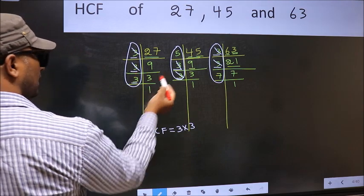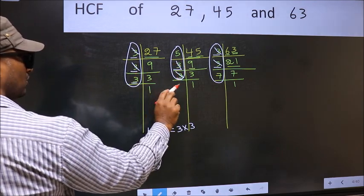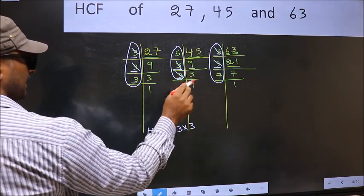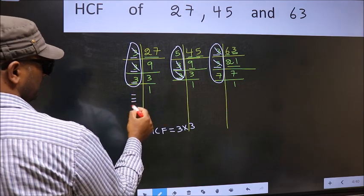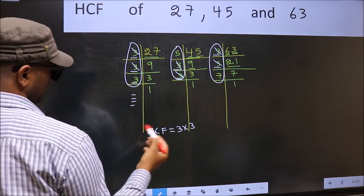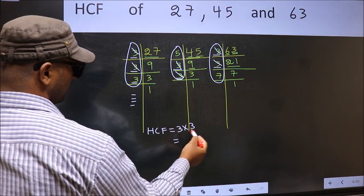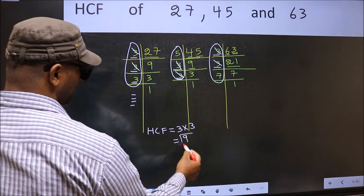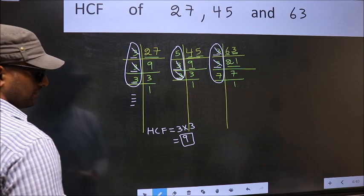Next number 3. Do we have 3 here? No. No need to check in the other place. No more numbers have been left out. Therefore, HCF is 3 into 3, 9. 9 is our HCF.